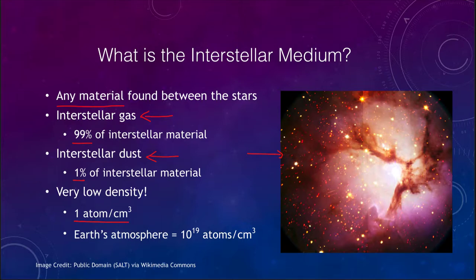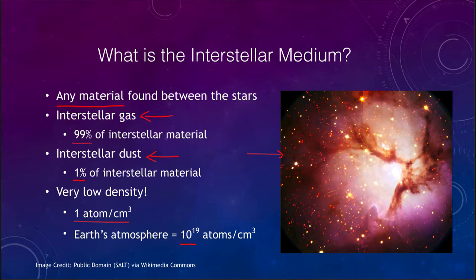What does that mean? For comparison, the Earth's atmosphere has 10 to the 19th atoms in every cubic centimeter — that's a one followed by 19 zeros. So there are lots of atoms here and very few scattered around the universe. Because there are so many cubic centimeters in space it still ends up being a lot of material, but it is extremely low density — better vacuums than we can create here on Earth.